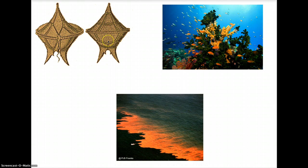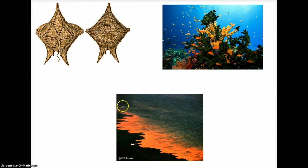To the left is an example of a dinoflagellate. If you notice this rough outer coating, this is known as their armor. The shape of the armor is reinforced by internal plates of cellulose. To the right is an example of a coral reef in which dinoflagellates help with their photosynthetic output. And at the bottom here is an example of their red tides.